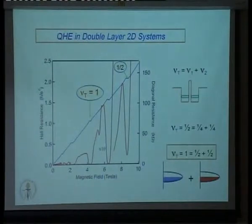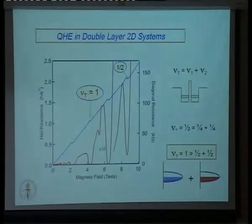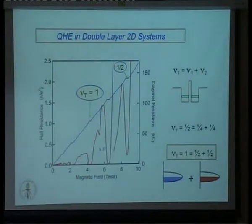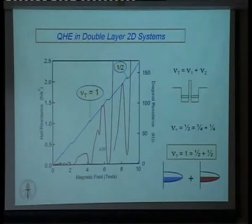Those two plateaus are not present in a single-layer system. You have to be careful that these filling factors are for the total electron density in the system, not the density in the individual layers. When you think of filling factor one, it's totally one Landau level, but half of the electrons are in one quantum well and the other half are in the other quantum well — one equals a half plus a half. If the layers were far apart from one another, there would not be a Hall plateau, so this is a special state.